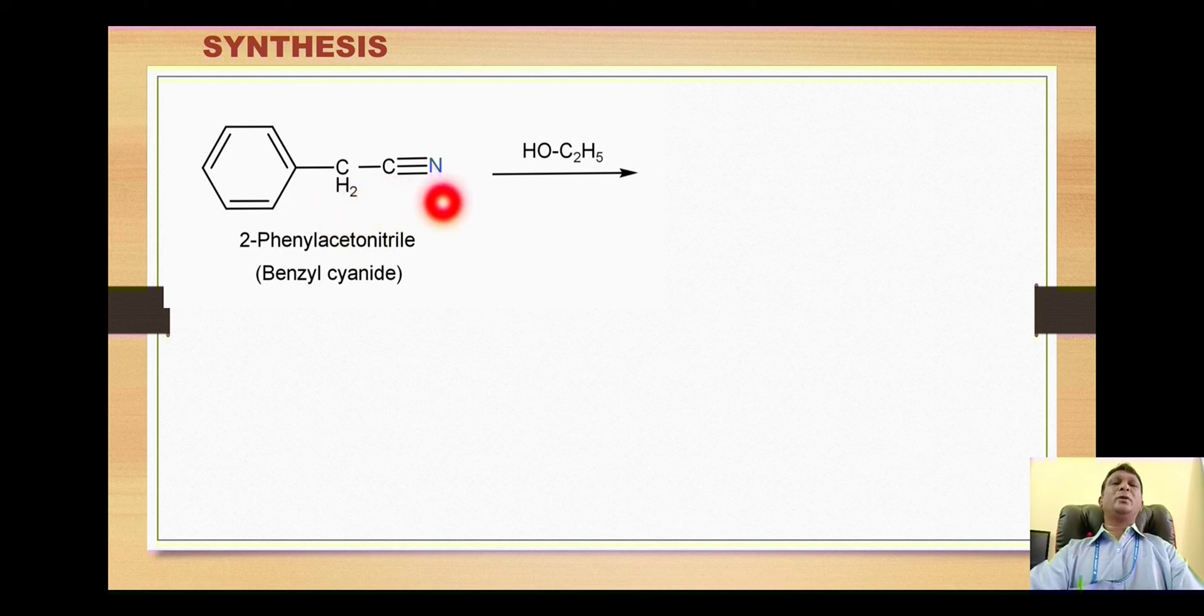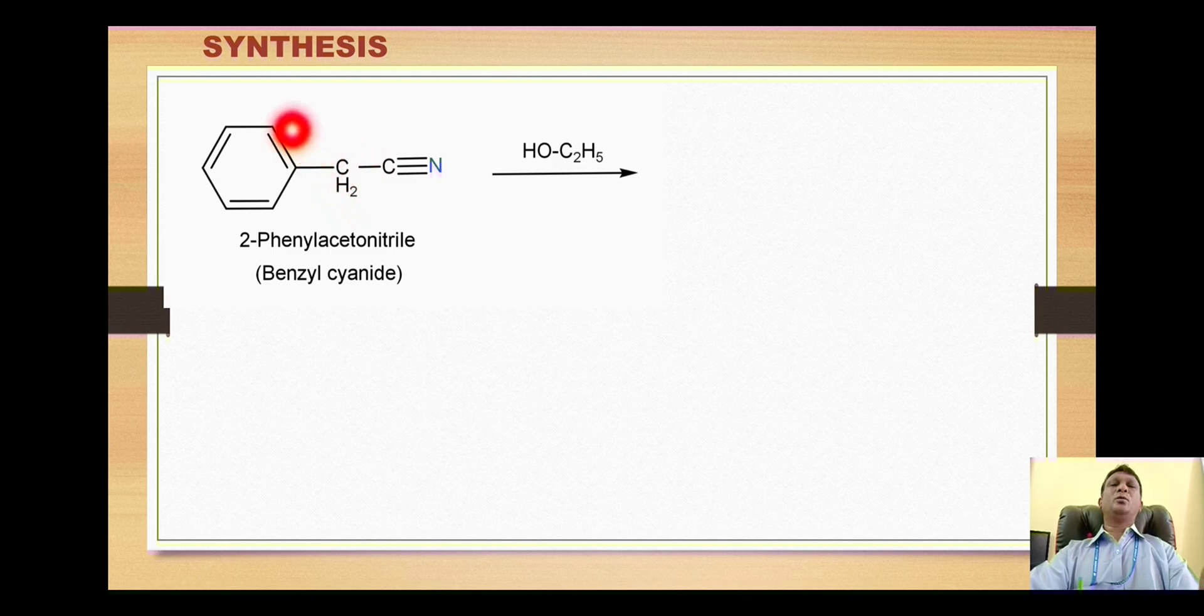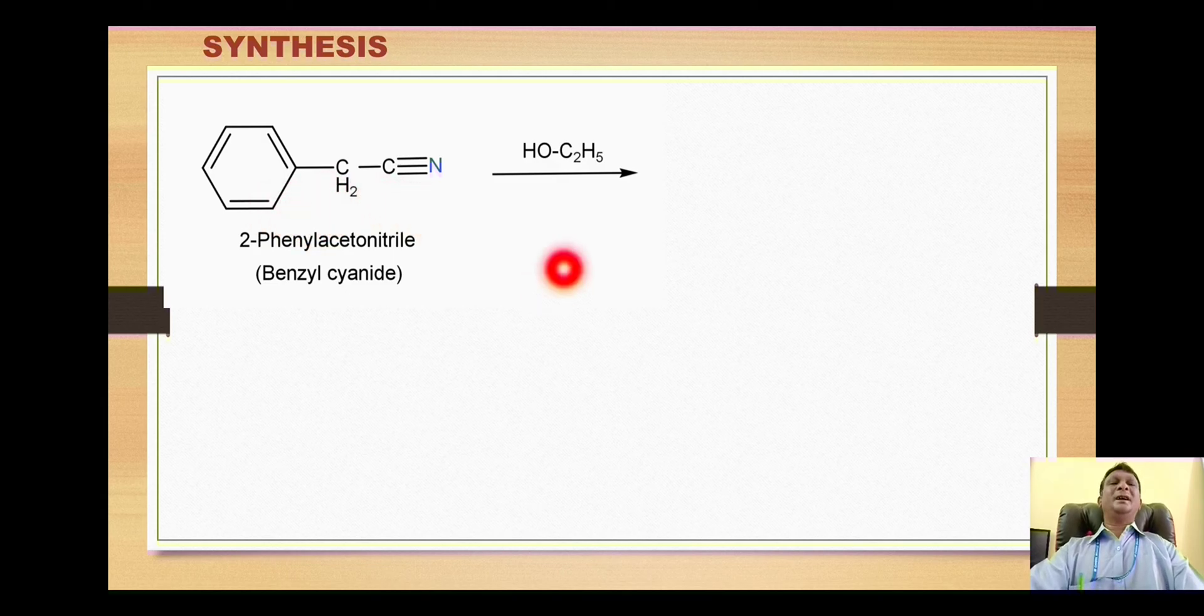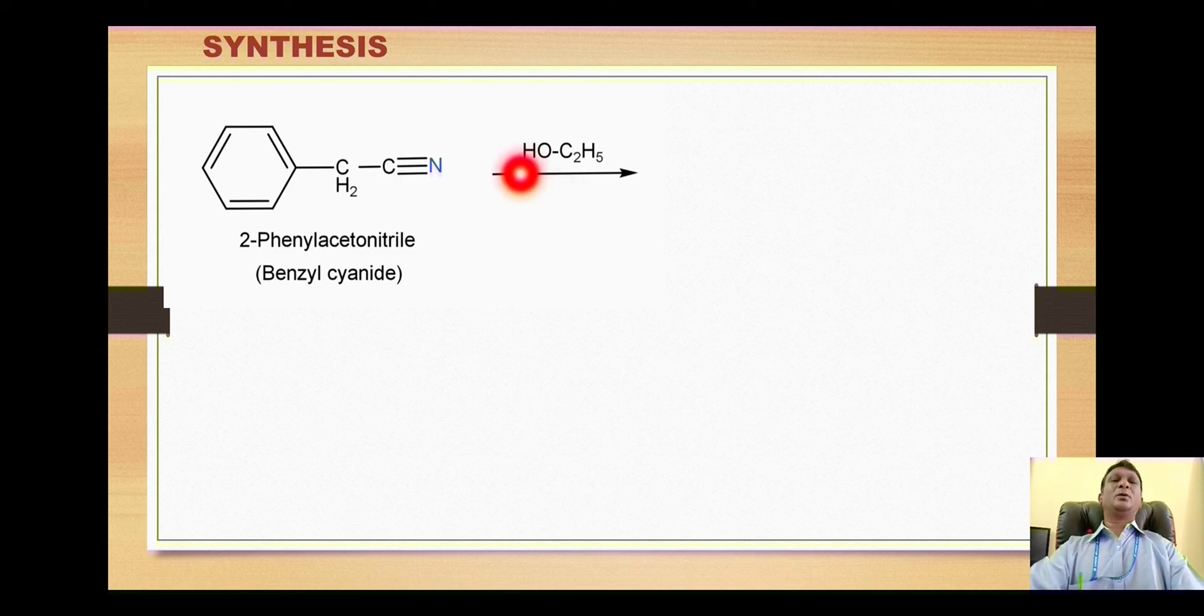We call it nitrile because there is a triple bond between this carbon and nitrogen. This is carbon number one and this will become number two, and on two we have a phenyl, so it is called 2-phenylacetonitrile, which reacted with ethanol.